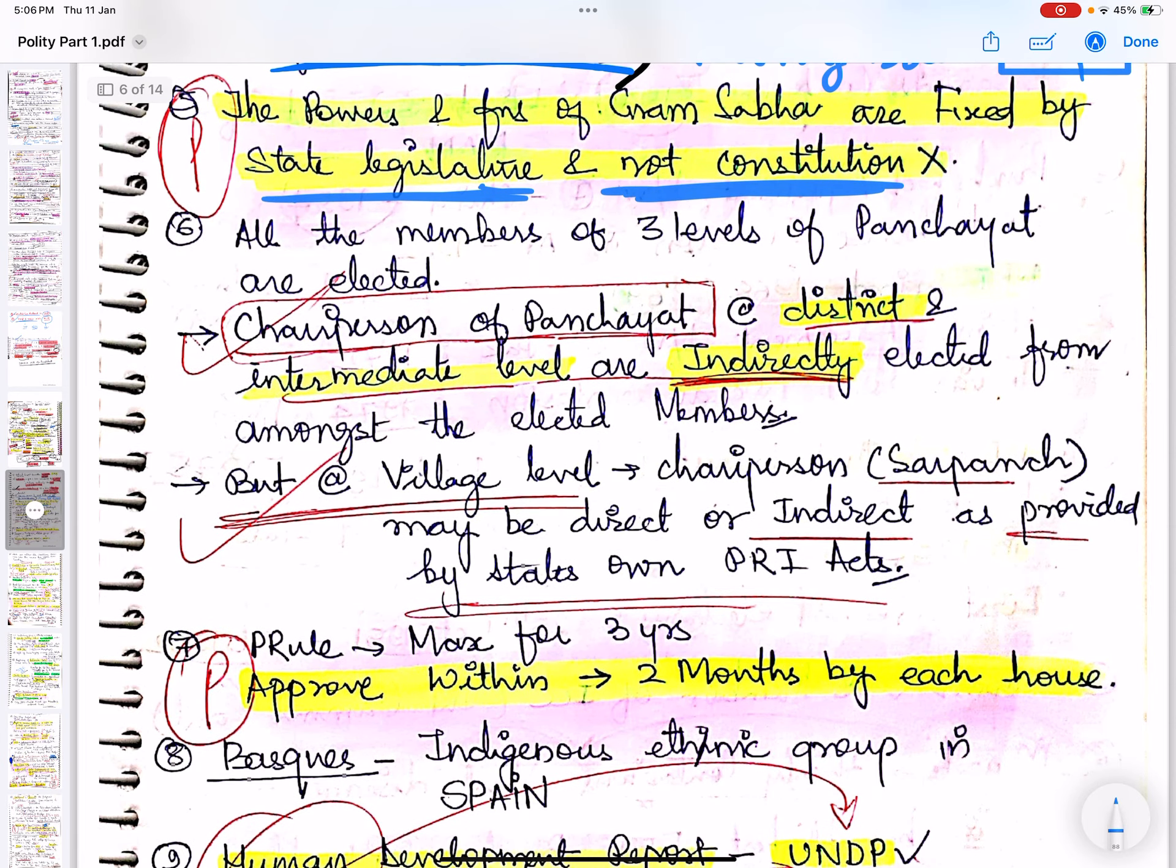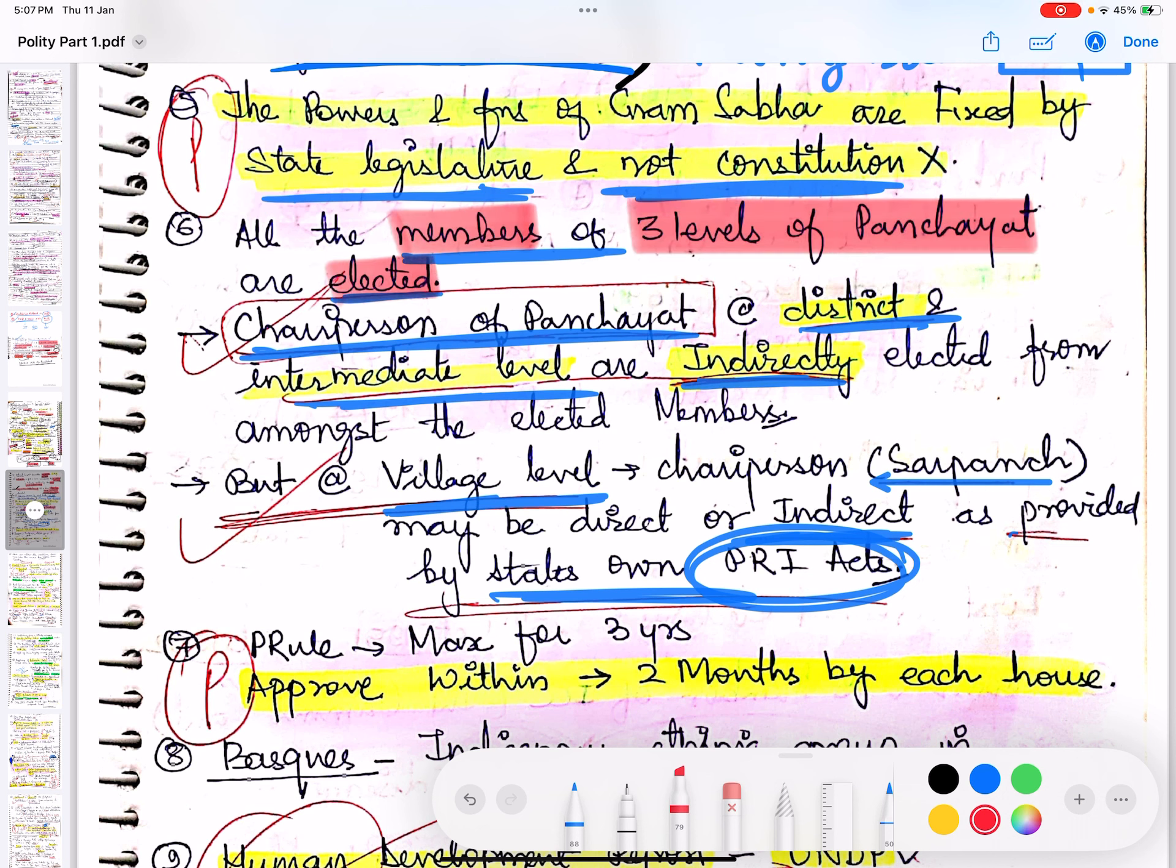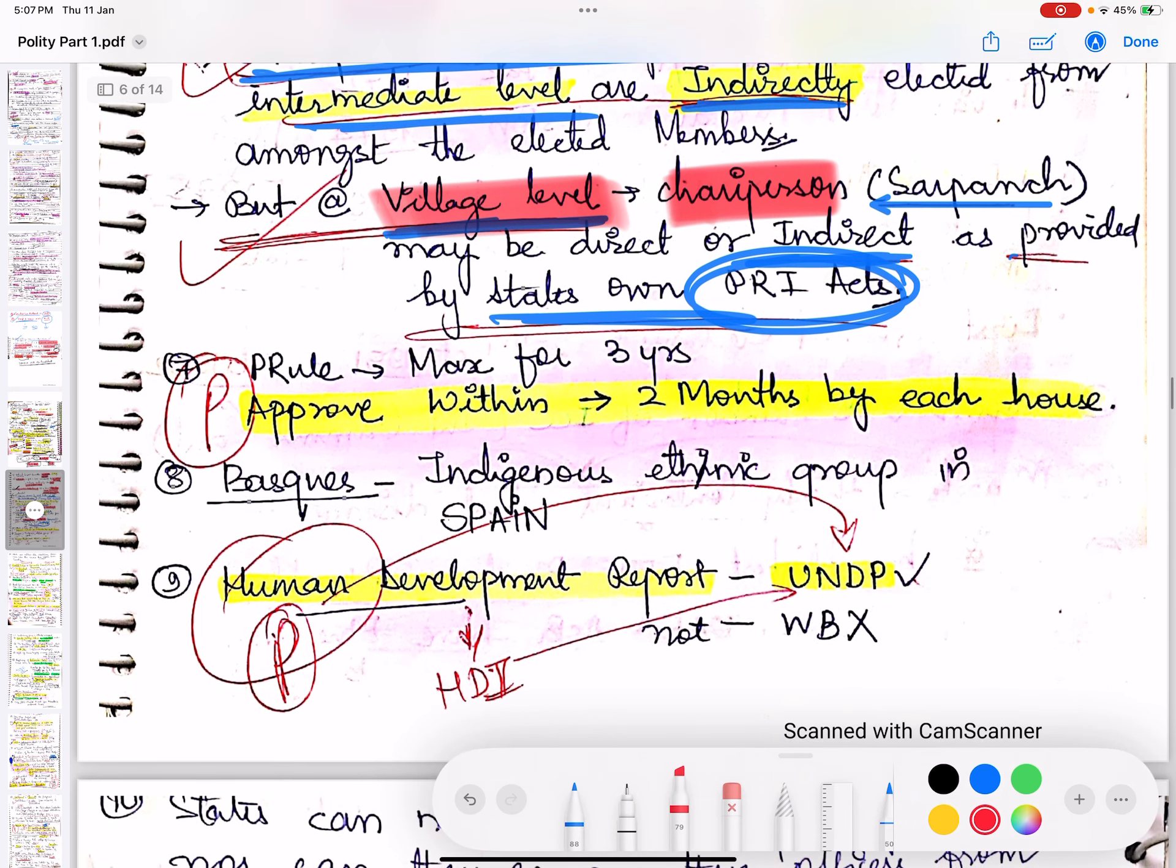All the members of the three levels of Panchayat are elected, directly elected. But the chairperson of the Panchayat at district and intermediate level is indirectly elected. At village level, the Panchayat chairperson, also called the Sarpanch, can be either indirect or direct - the state will decide through the state Panchayati Raj Act. So three levels of Panchayat have all members directly elected. At intermediate or district level, the chairperson is always indirectly elected, but at village level, the chairperson can be direct as well as indirect, decided by the state.